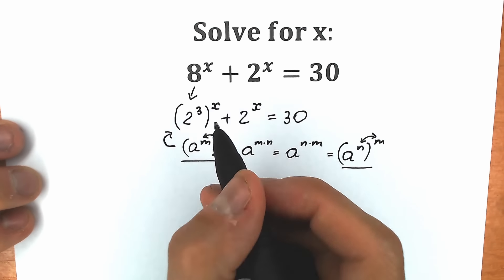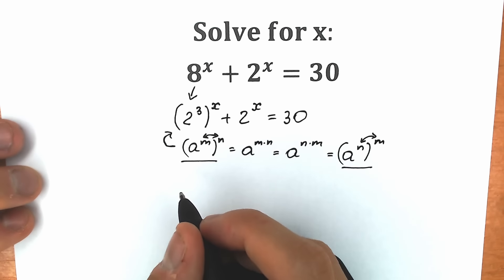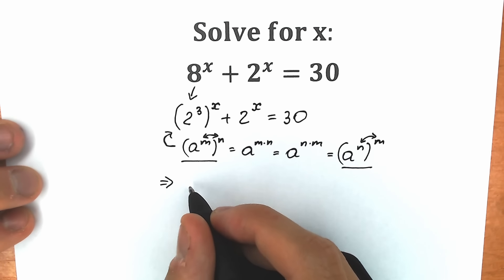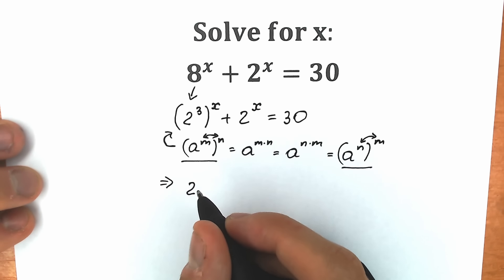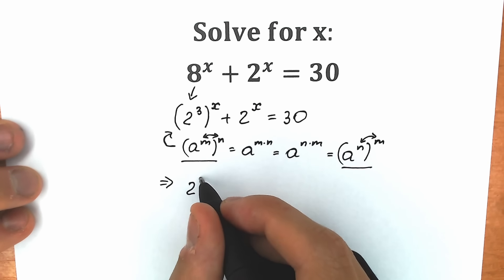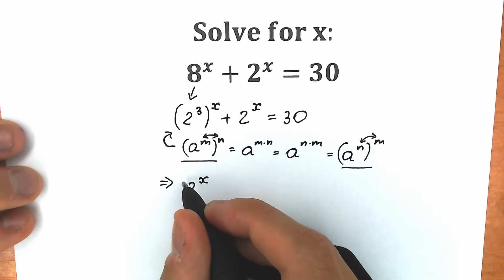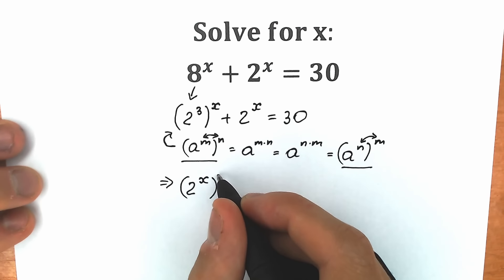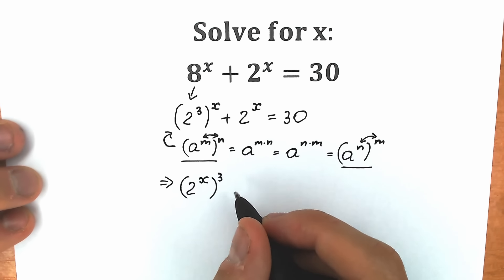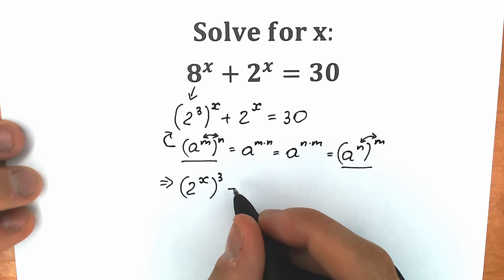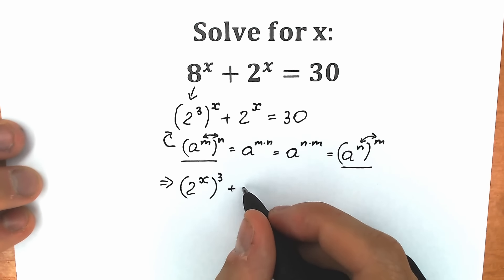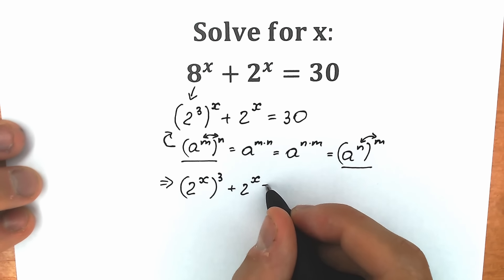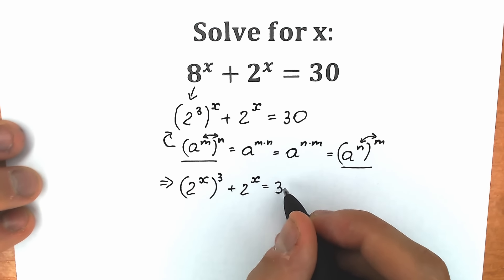So let's swap this 3 and x. As a result, 2 to the power x goes inside and 3 goes outside. So right here we have (2 to the x) cubed, plus 2 to the x, equal to 30.